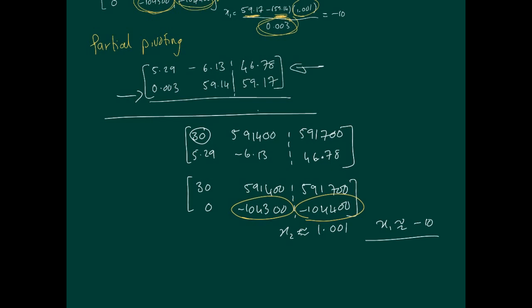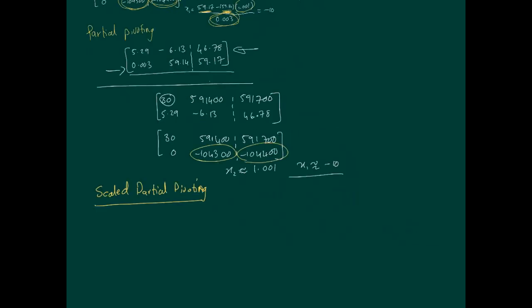What can we possibly do in this case? We'll use a technique called scaled partial pivoting. This strategy involves first defining a scaling factor for each row.